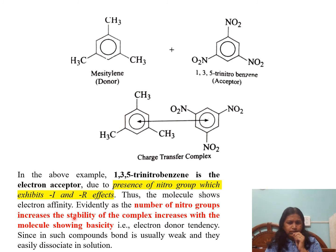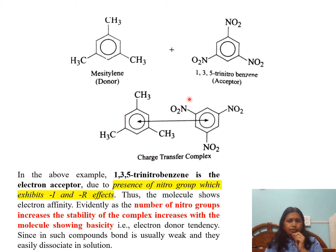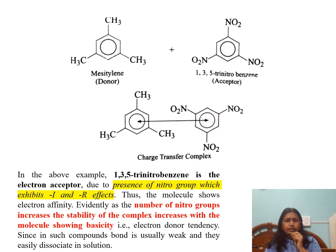As the number of electron-withdrawing groups increases — comparing nitrobenzene to dinitrobenzene to trinitrobenzene — the stability of the complex increases with molecules showing greater electron-donor tendency, that is, basicity. Since the bond in such compounds is usually weak, they easily dissociate in solution.